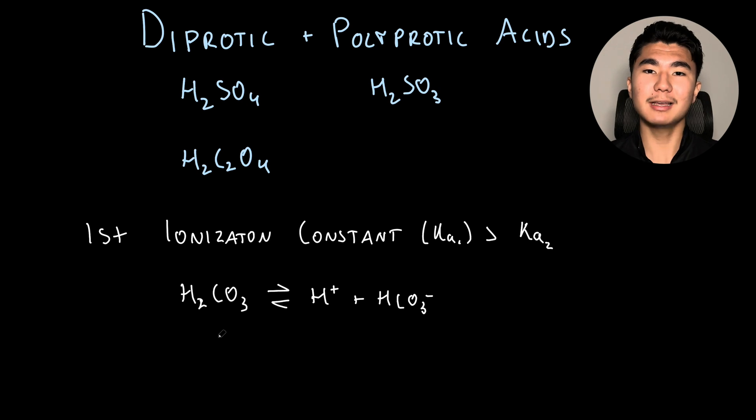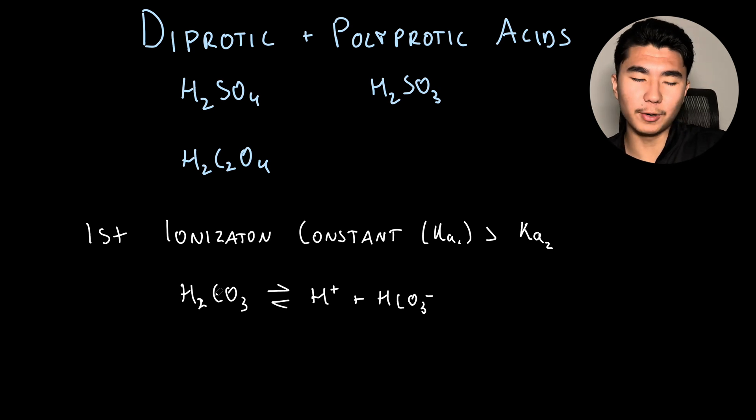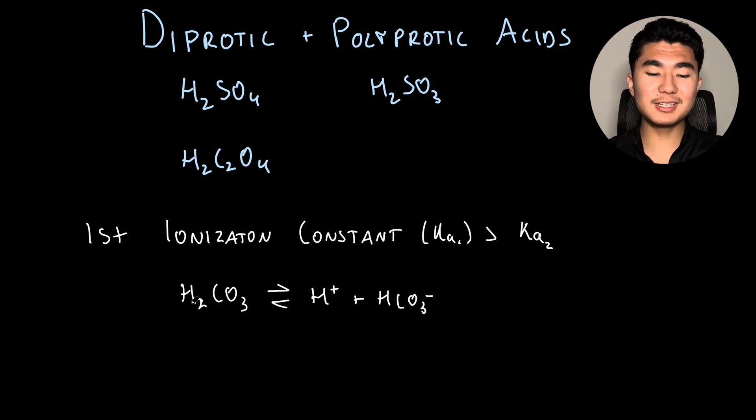This makes sense because if we have an electronegative element, it will pull the electron density towards itself, hogging all the attention and the hydrogen will be left as a third wheel. So it's easier to remove the first hydrogen from a neutral species.